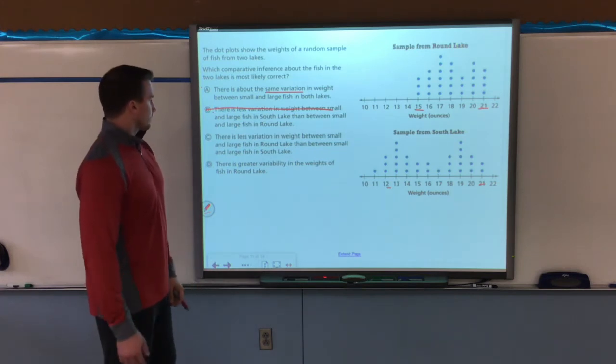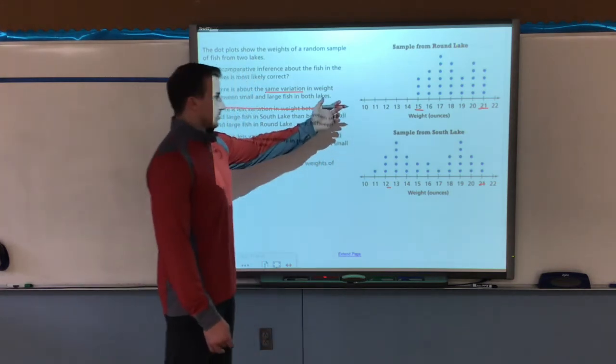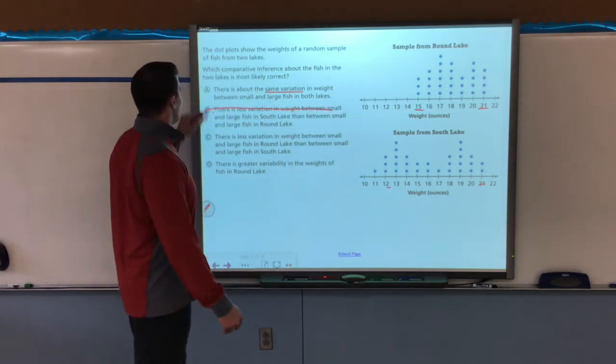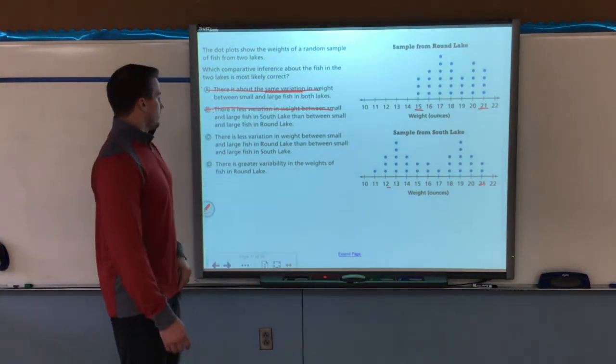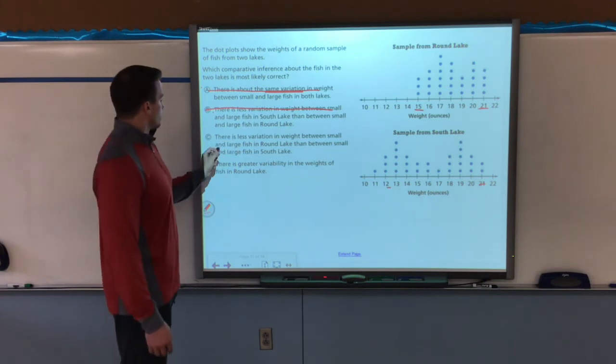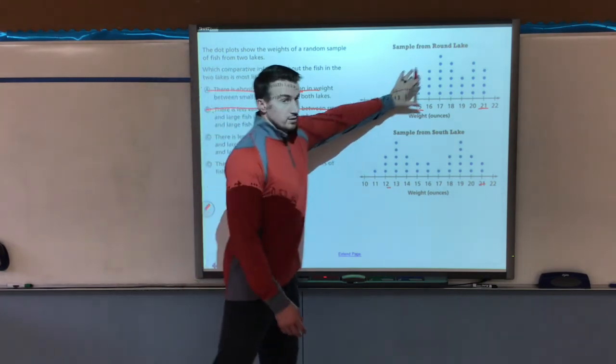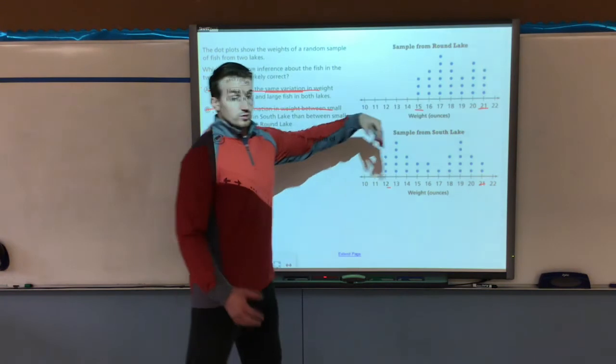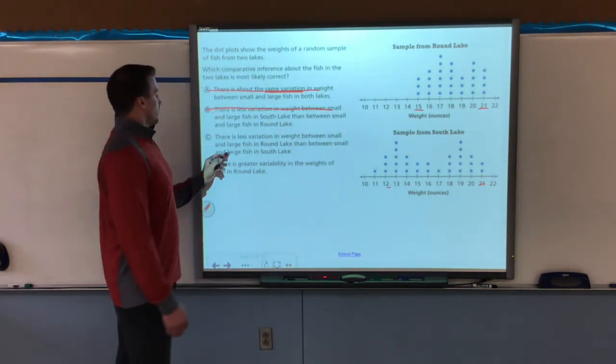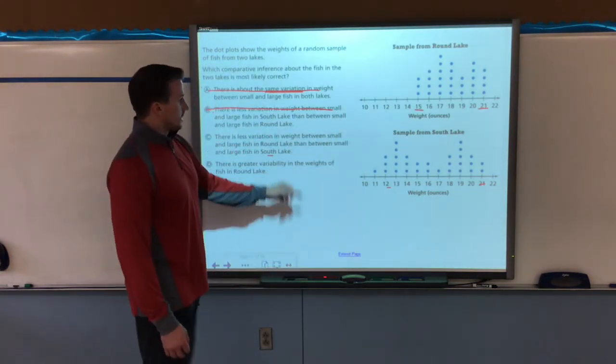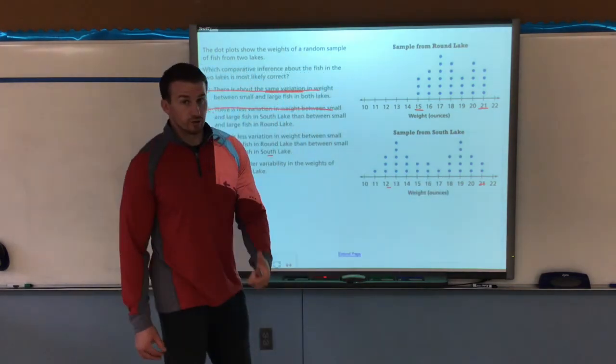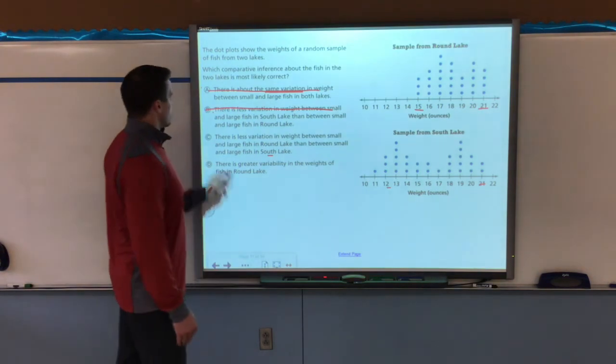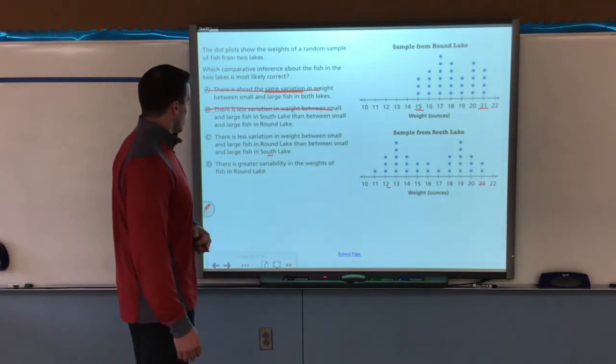C. There is less variation in weight between small and large in round lake. The variation is of course six or the range between the fish in south lake. Well, the variation in weight is 21 to 12, which is a larger range. More spread out, more variation. So it could be C. Let's just make sure with D. It says there is greater variability in the weights of fish in round lake. Well, that's not true because if you look at where the data is on the dot plot or the line plot, it's not that case.